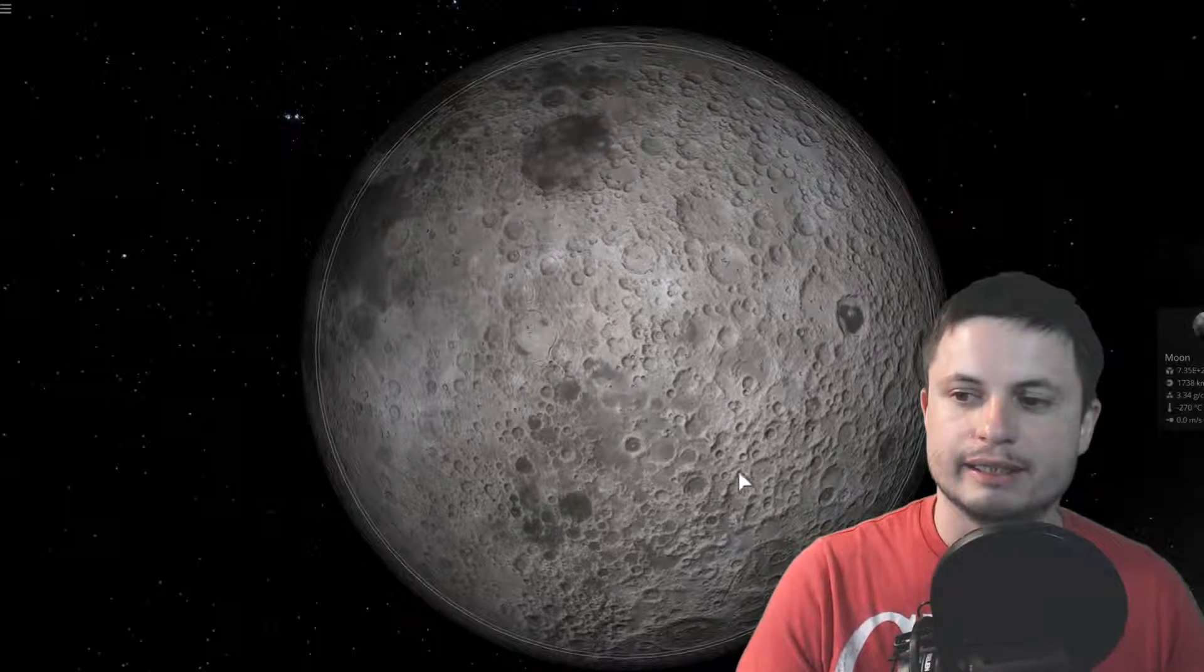Specifically the Chang'e 4 is near the von Kármán crater which is part of this very large basin. Now the interesting thing about this part of the moon is that the crust here, the actual thickness of the crust is much thinner than everywhere else on the moon. The crust here is only about 30 kilometers whereas everywhere else on the moon it's anywhere from 60 to 80 kilometers.